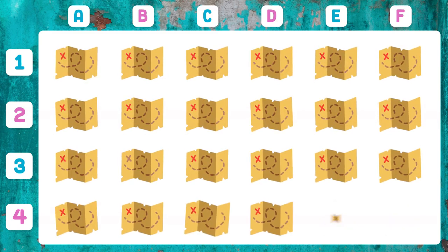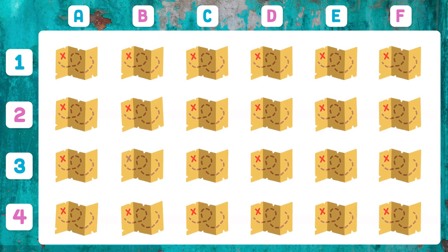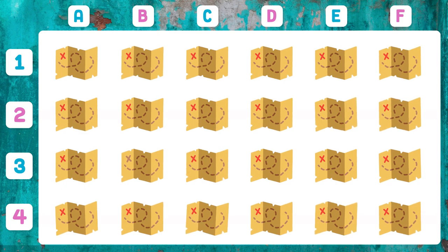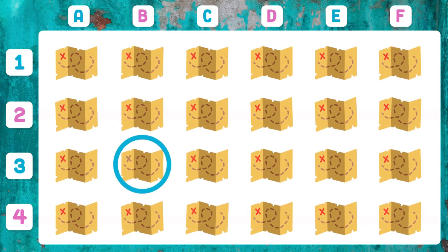Which of these maps does not mark the place of the treasure correctly? The map that appears in 3B — it does not have the red cross.